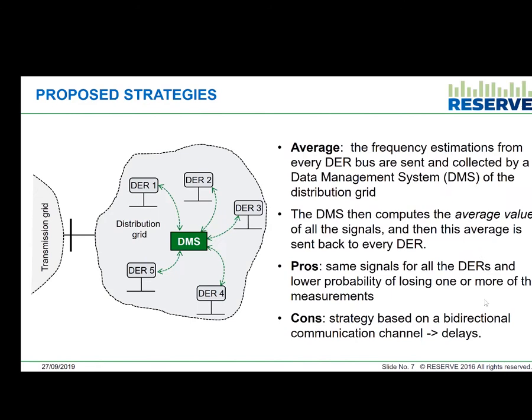The third and last strategy is called the average strategy. The frequency estimation is made locally at every point, then sent to the data management system, where the average of all points is calculated. This average is then sent to the controller of every plant. The positive aspect is the use of only one signal for all the sources. The drawback is that the strategy is based on bidirectional communication — sending first to the DMS and then back to the sources — so the delay is higher.